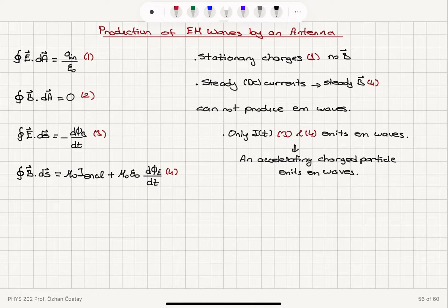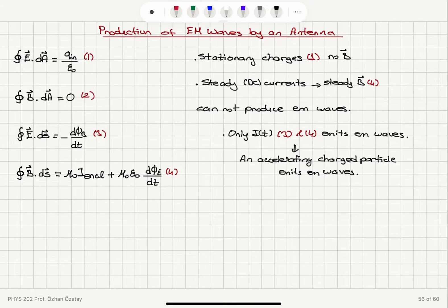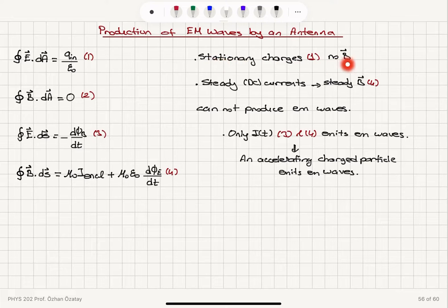Looking at the first Maxwell equation, which tells us that a charge enclosed by a closed surface will create an electric flux — stationary charges will create an electric field. However, stationary charges do not create a magnetic field, so that will not be enough to produce electromagnetic waves.